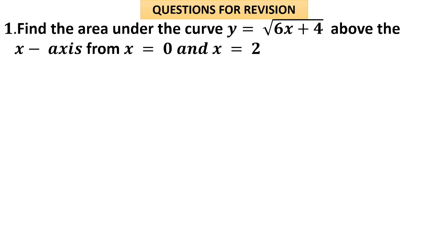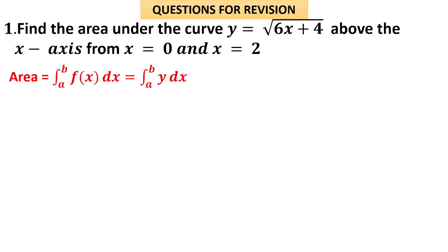Find the area under the curve y = √(6x + 4) above the x-axis from x = 0 to x = 2. Here the function is given and the range of x is given from 0 to 2. Therefore the area is simply integral from 0 to 2 of √(6x + 4) dx.